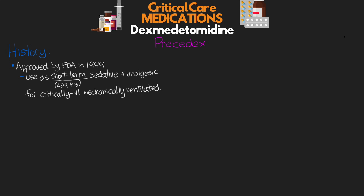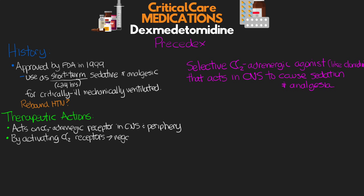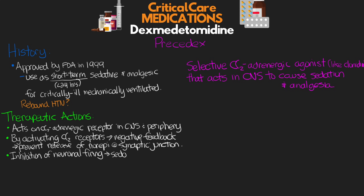The short-term approval was given due to some concerns over withdrawal side effects like rebound hypertension, but these concerns haven't consistently been observed in clinical research studies. Dexmedetomidine is actually a selective alpha-2-adrenergic agonist — another example being clonidine — and its primary action is in the central nervous system to cause sedation and analgesia. It acts on the alpha-2-adrenergic receptor both in the CNS and in the periphery, blocking those receptors as a negative feedback loop, preventing the release of norepinephrine at the synaptic junction, which inhibits neuronal firing leading to sedation and analgesia.